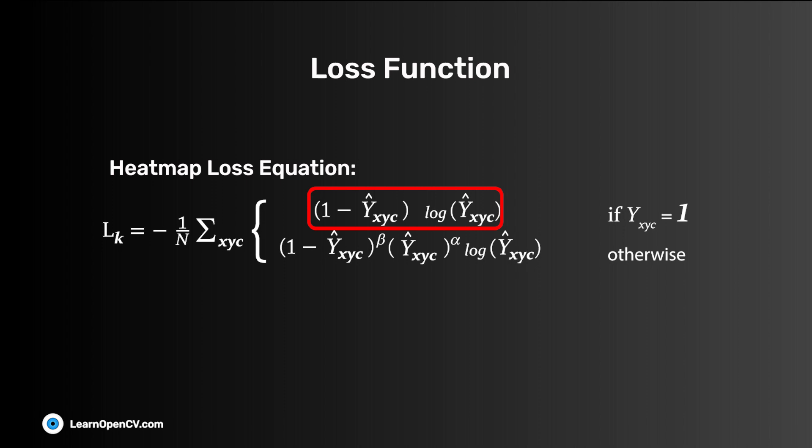However, the equation becomes interesting for the other case. Let's further divide the equation into two. The latter part is focal loss for the negative class. We can skip it. The former part acts as a discounting factor. It discounts more if the heatmap is closer to the keypoint.